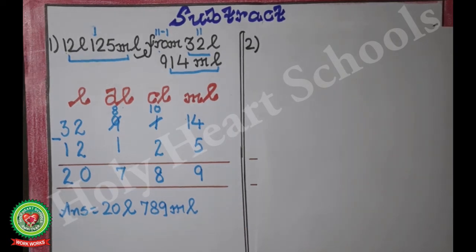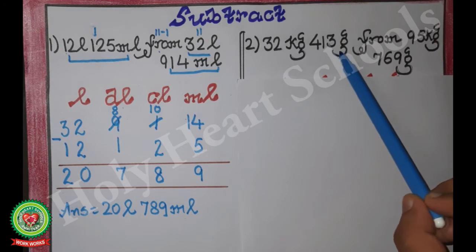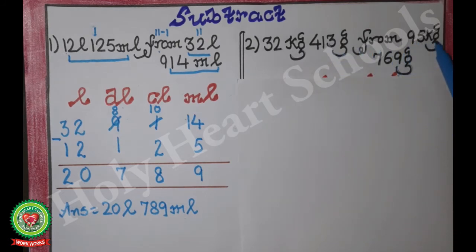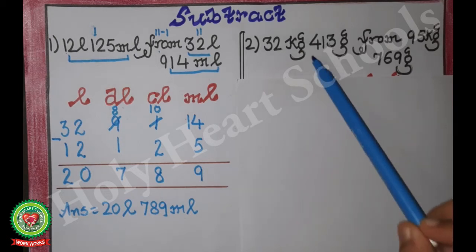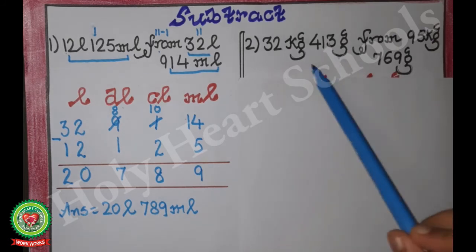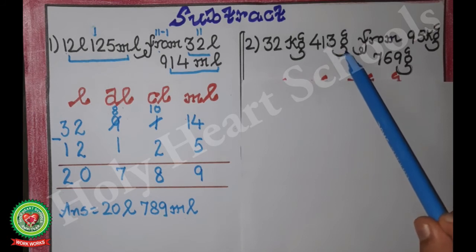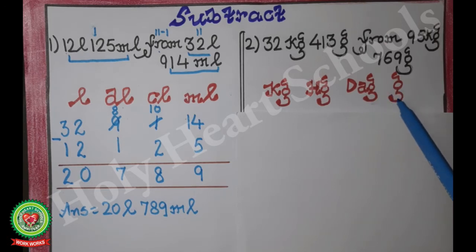Now let's take one more example. Subtract 32 kilograms 413 grams from 95 kilograms 769 grams. What is the first step? We see which two units are given: kilogram and gram. So we write the table from kilograms till grams — kilograms, hectograms, decagrams, and grams.